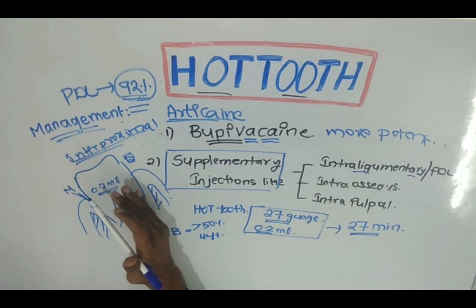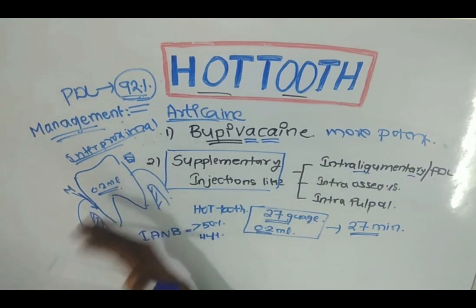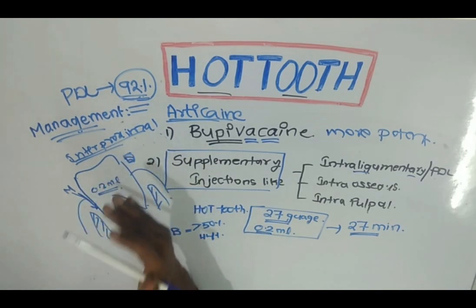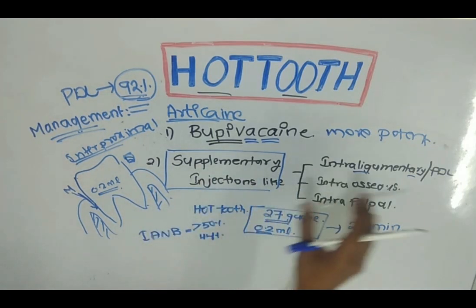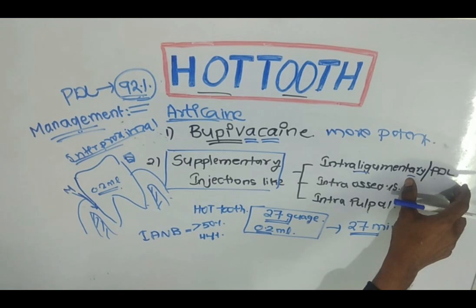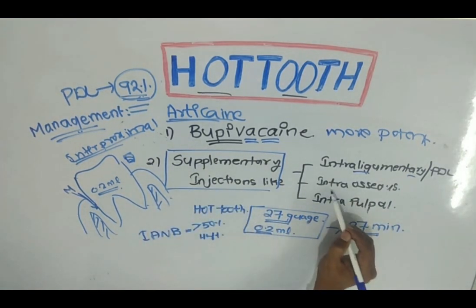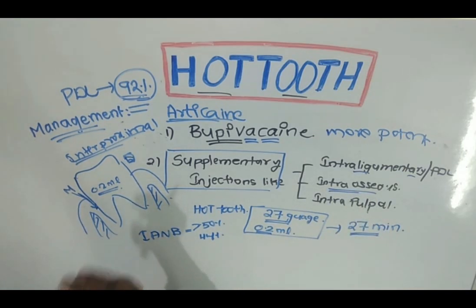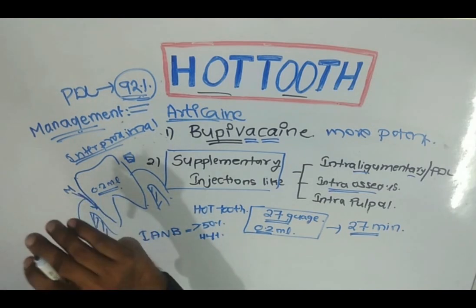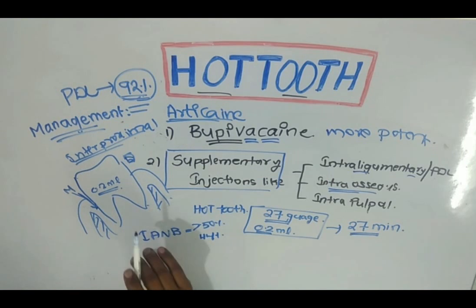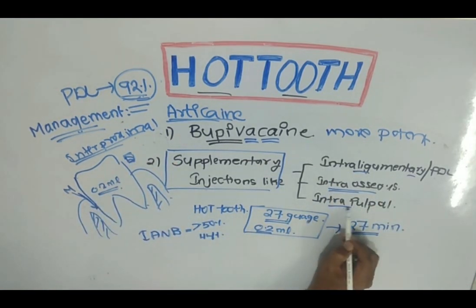If you fail to achieve anesthesia with a PDL or intraligamentary injection, try a second time and you will get close to 100% anesthesia. Even if you fail again, the next option is an intraosseous injection, where you drill a hole into the bone and directly insert the needle into the perforated bone to deliver the local anesthetic solution directly into the bone.